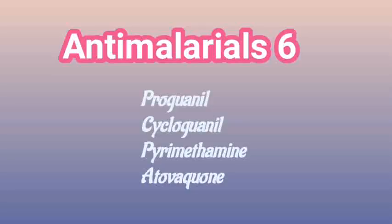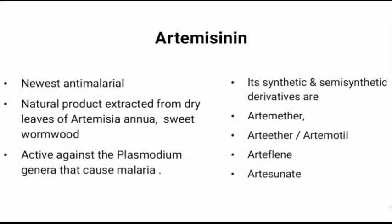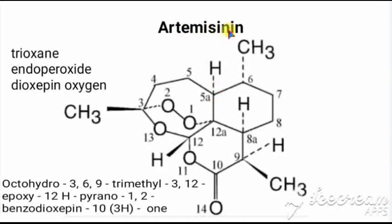We have already seen six classes of anti-malarials. In this class we are going to see the newer anti-malarial called artemisinin and its derivatives. It is the newest anti-malarial and is a natural product extracted from the dry leaves of Artemisia annua, a sweet wormwood. It is active against the Plasmodium genera that cause malaria. Its synthetic and semi-synthetic derivatives are artemether, arteether, artemotil, and artesunate.